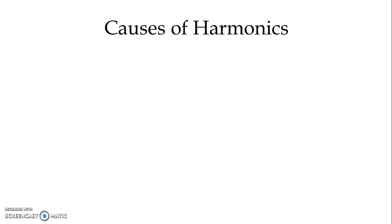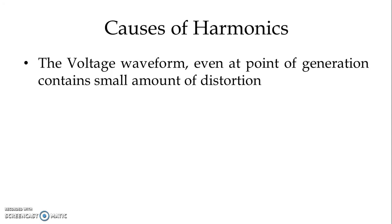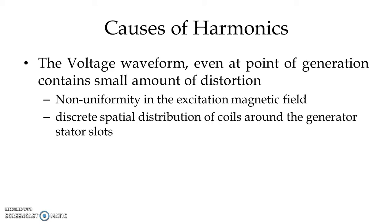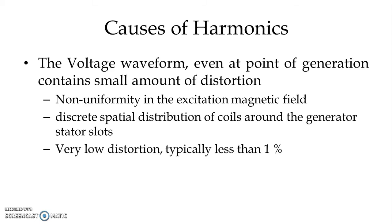We know that in case of harmonics, we have voltage harmonics as well as current harmonics. Starting with voltage harmonics, a pure sinusoidal voltage waveform is just a hypothetical quantity. Practically, a pure sinusoidal voltage waveform might not be possible. The voltage waveform even at the point of generation contains a small amount of distortion, and that may be because of non-uniformity in the excitation magnetic field as well as discrete spatial distribution of coils around the generator stator slots.